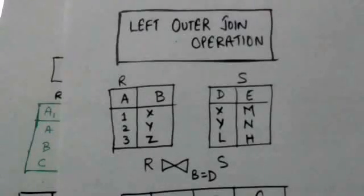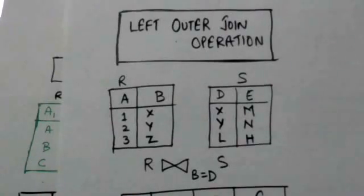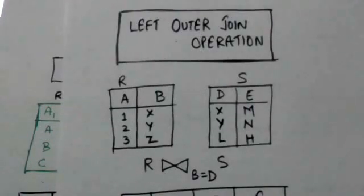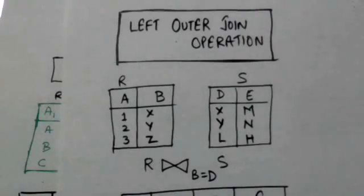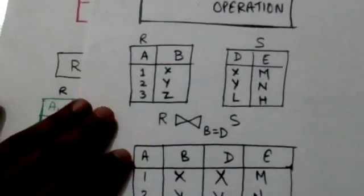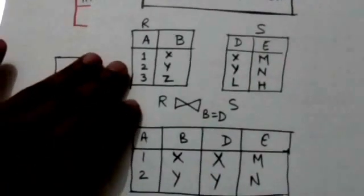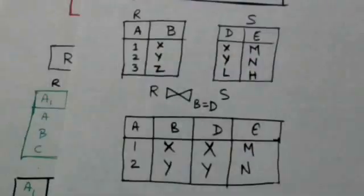Hello friends, welcome back. In this tutorial we will study about left outer join operation. Join operations match tuples which satisfy the given join condition — only tuples with a matching tuple appear in the result. This amounts to loss of information. For example, suppose there are two relations R and S.